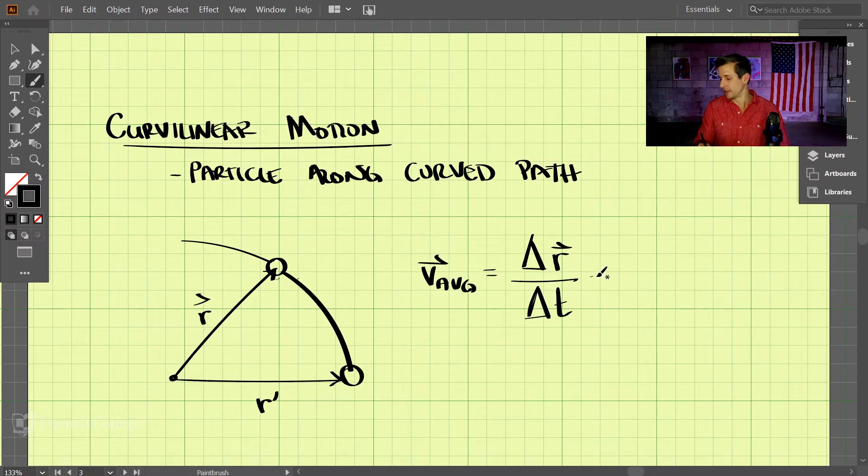That change in r vector, I'll draw that vector out. The change in r vector is a straight line from our initial position to our end position. So that is our change in r.